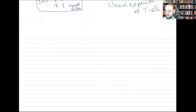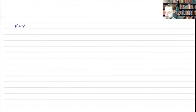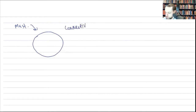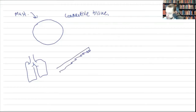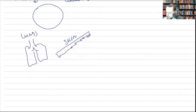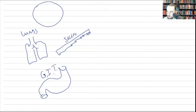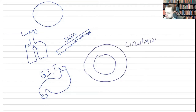Mast cells are found normally in your body, made by the bone marrow, and predominantly found in your connective tissue. We see mast cells especially in the lungs, skin, stomach and GI tract, and also in the circulation on endothelial cells in the connective tissue.